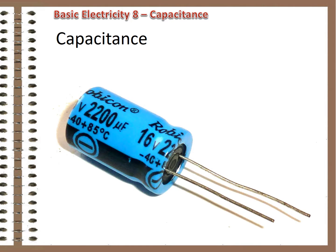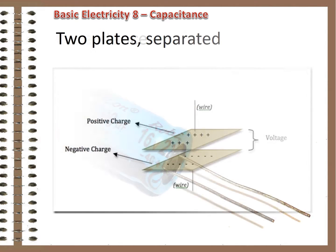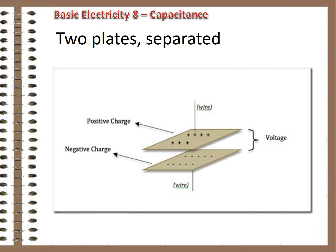There is another property of alternating current circuits that has effects on both the micro and macro scales. It involves an electrical property called capacitance. A capacitor is a device that consists of two conducting plates separated by a space or insulating material called a dielectric.